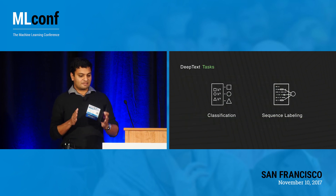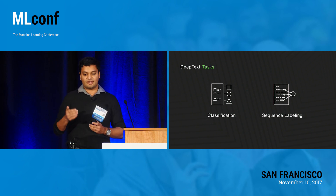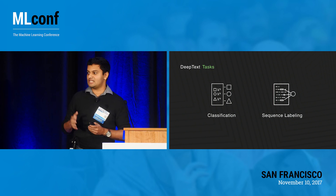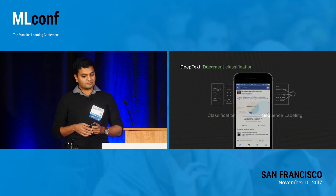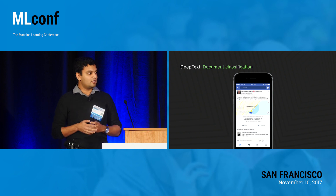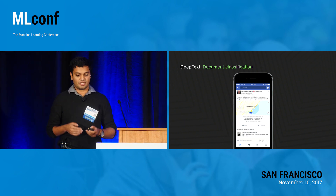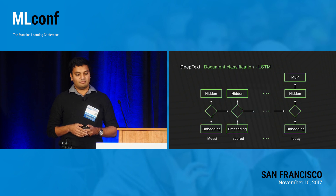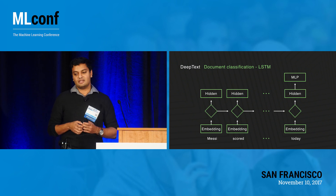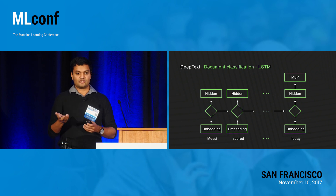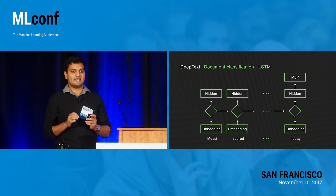I'll focus specifically on classification and sequence labeling. For text classification — given a document, whether a post, message, or comment — we want to figure out the topic. You can just throw it to an LSTM, run the entire document through, take the last hidden state, put softmax on top. But this is not interesting in 2017.